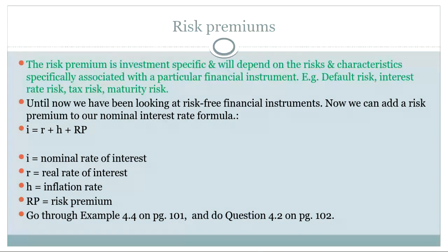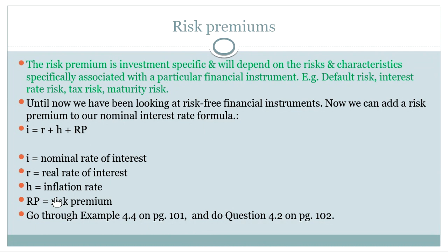This is where I've now added to the little calculation we had before, and this is on page 101 in your textbooks. Remember: the nominal interest rate equals the real interest rate plus inflation, so I equals R plus H. And to that we now add RP, which is the risk premium. You can read about that on page 101, and hopefully you do understand risk premiums now already.